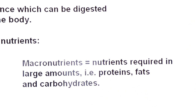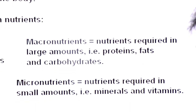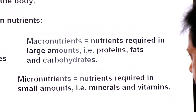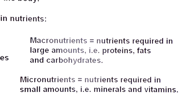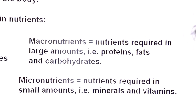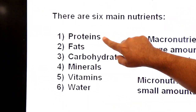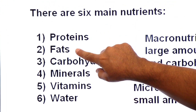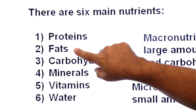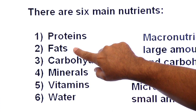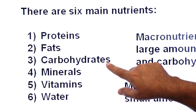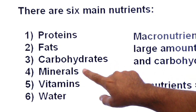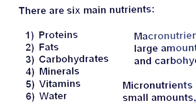Micronutrients are nutrients required in small amounts — that is, minerals and vitamins. For example, if you eat chicken, the main nutrient you get is protein. If you eat fast food, the main nutrient is fats. If you eat rice or potatoes, you get carbohydrates. Minerals and vitamins come from fruits and vegetables.